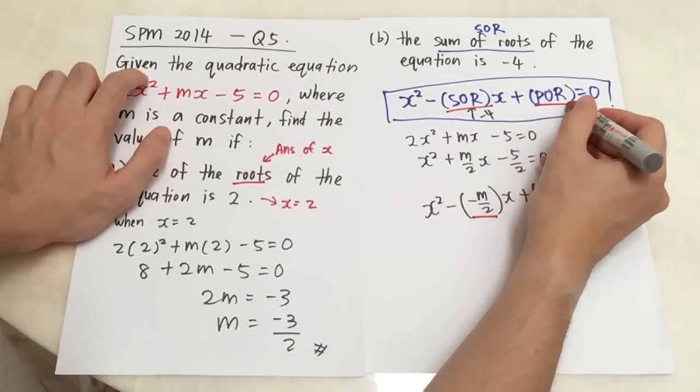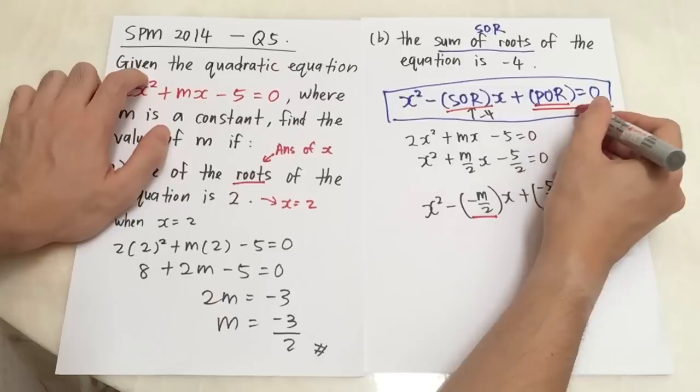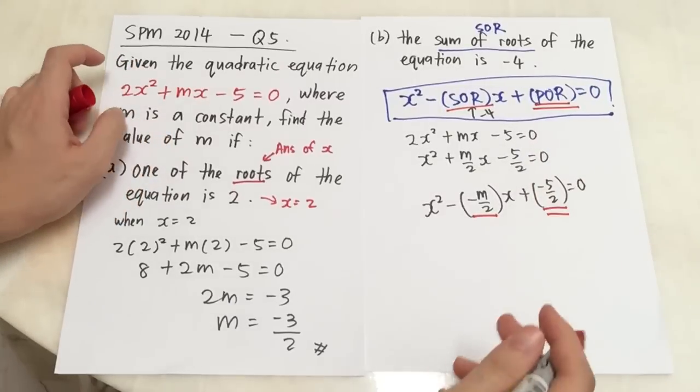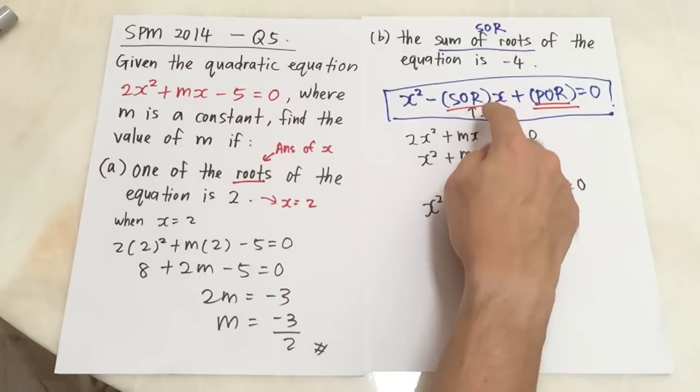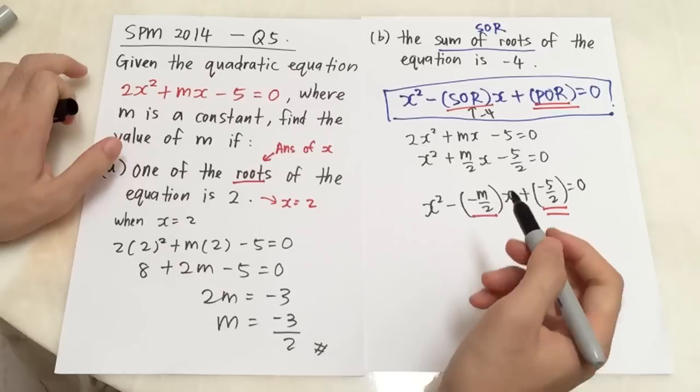Then I separate the positive symbol. So it will be x squared minus negative m over 2x plus negative 5 over 2 equals to 0. Why I want to do plus negative 5 over 2? Because I just want you to see the same thing between this formula and the equation I just write. Sum of root, sum of root. Product of root, product of root.